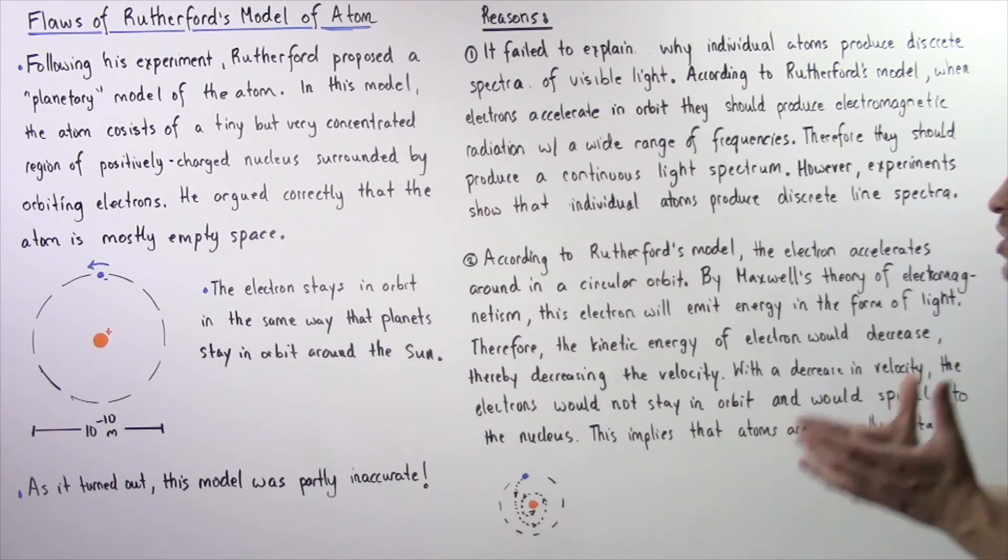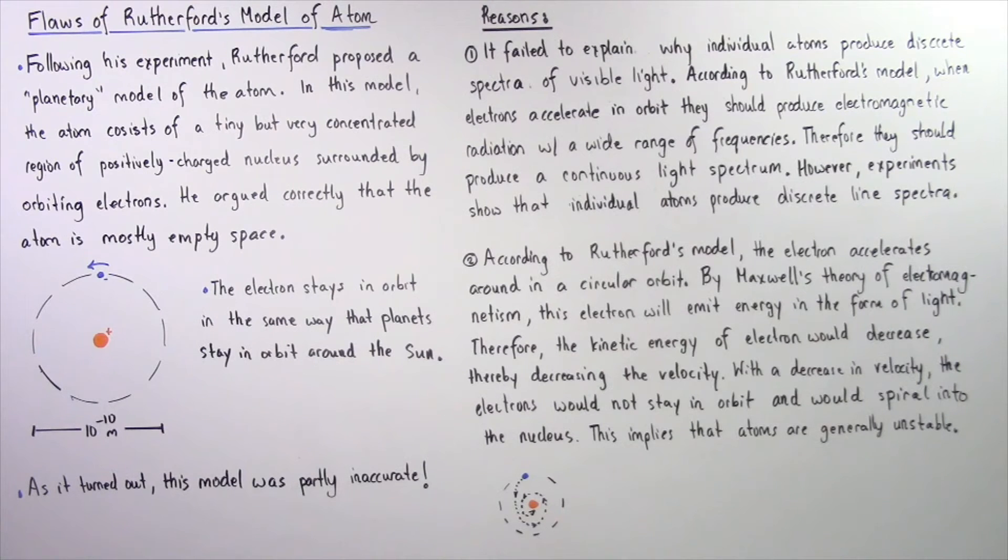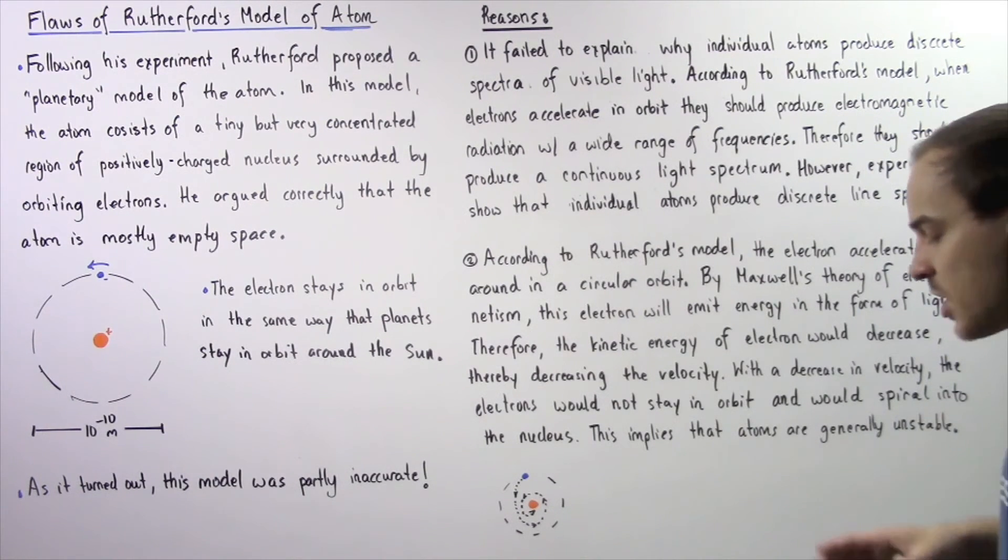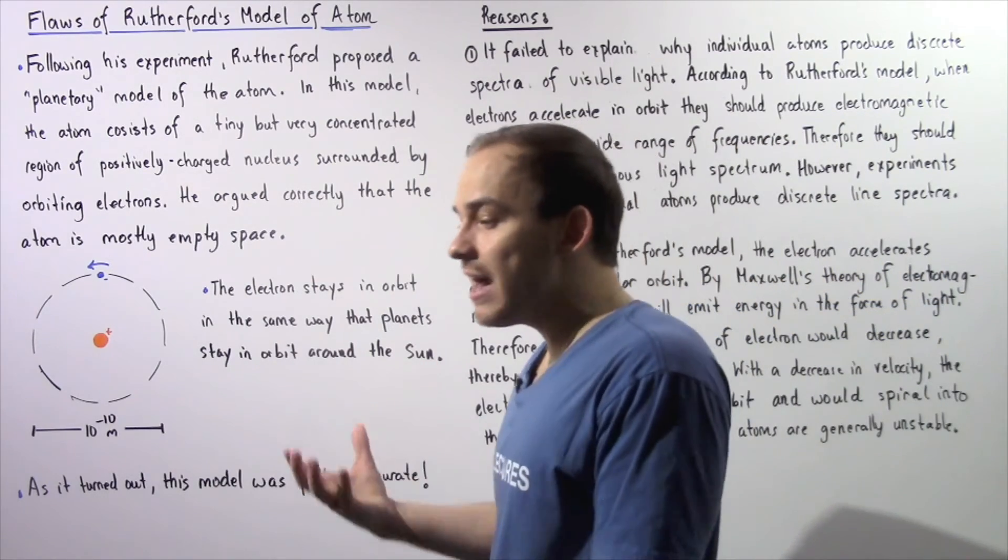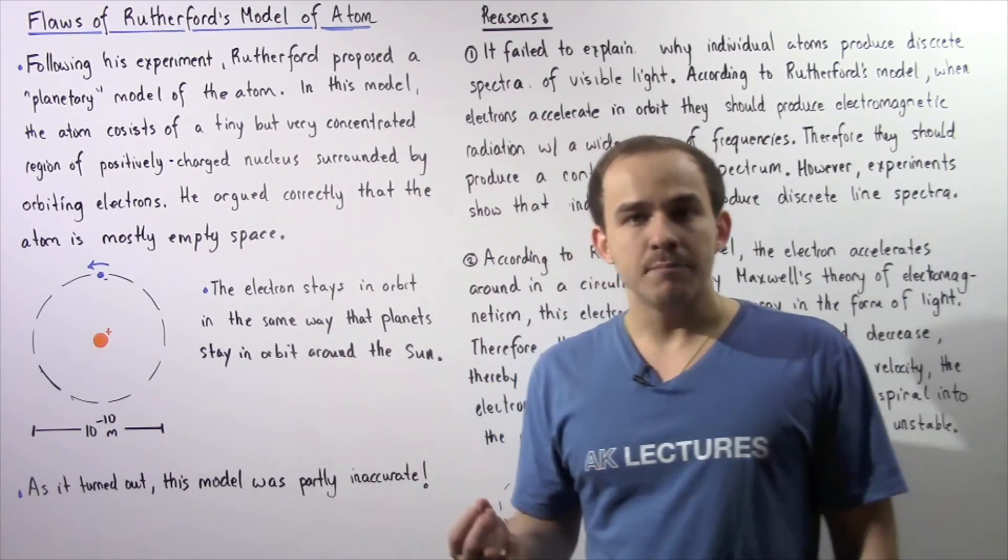And it basically follows a spiral path, and eventually will hit the nucleus, and the atom would essentially be destroyed. So this implies that atoms are generally unstable. Now, we know this is not actually true,